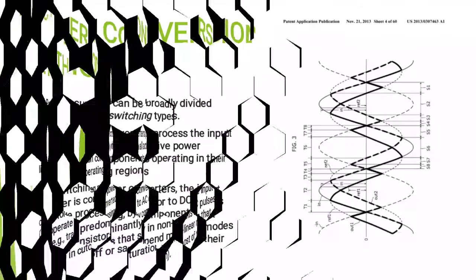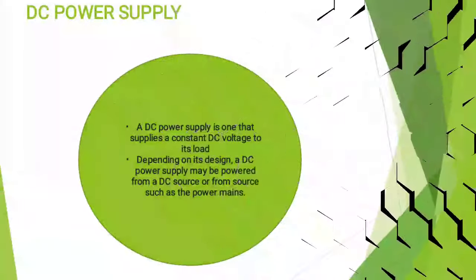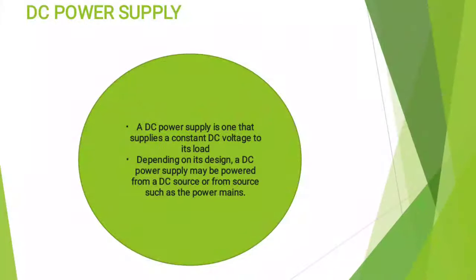A DC power supply is one that supplies a constant DC voltage to its load. Depending on its design, a DC power supply may be powered from a DC source or from a source such as the power mains.